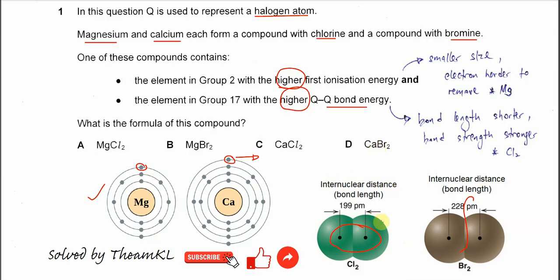So the second statement refers to chlorine. From these two statements, we know the compound must be magnesium chloride. So the answer is A. That's all, thank you.